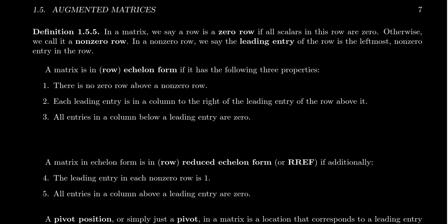We say that a matrix is in echelon form if the following three conditions hold. First, there is no zero row that's above a non-zero row — so all the zero rows are at the bottom of the system. Next, each leading entry in a row is to the right of any leading entry in a row above it. And the last condition is that all entries in a column below a leading entry are zero.